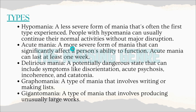Next, acute mania — a more severe form of mania that can significantly affect a person's ability to function. Acute mania can last at least one week. Next, delirious mania — a potentially dangerous state that can include symptoms like disorientation, acute psychosis, incoherence, and catatonia.